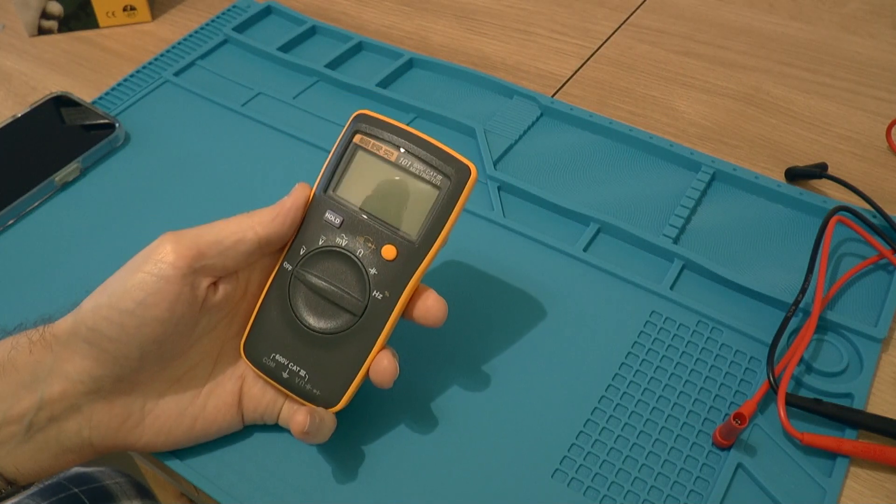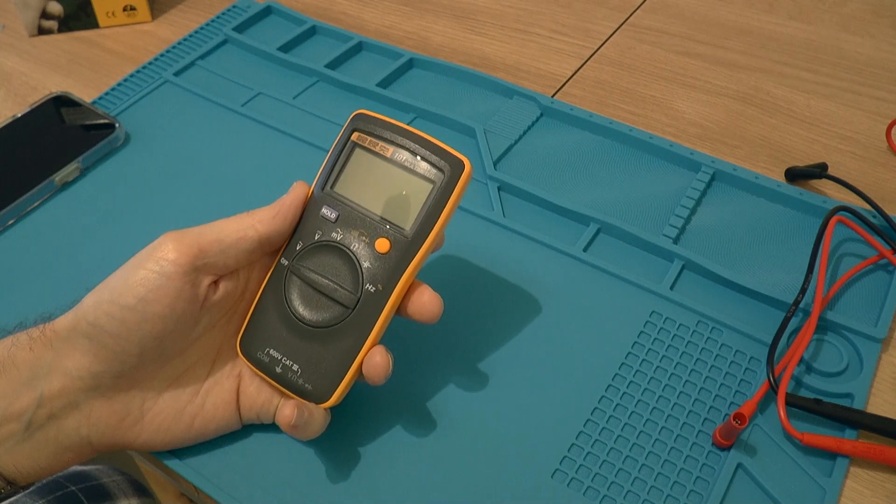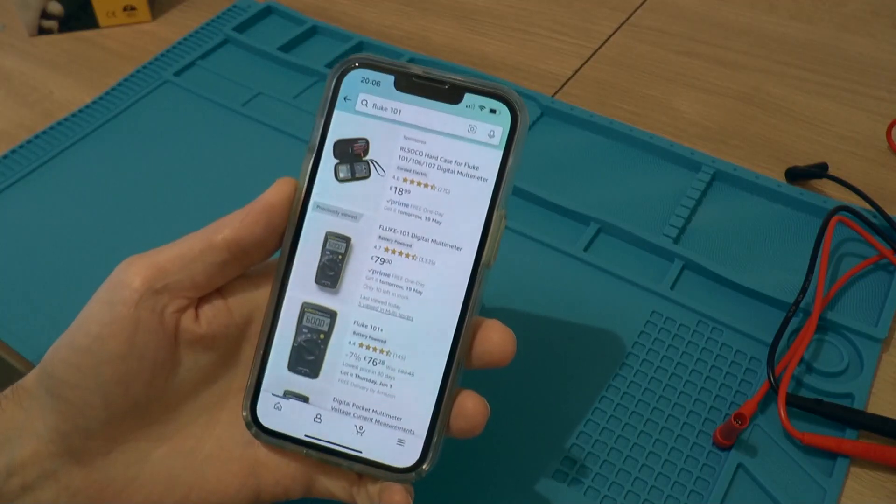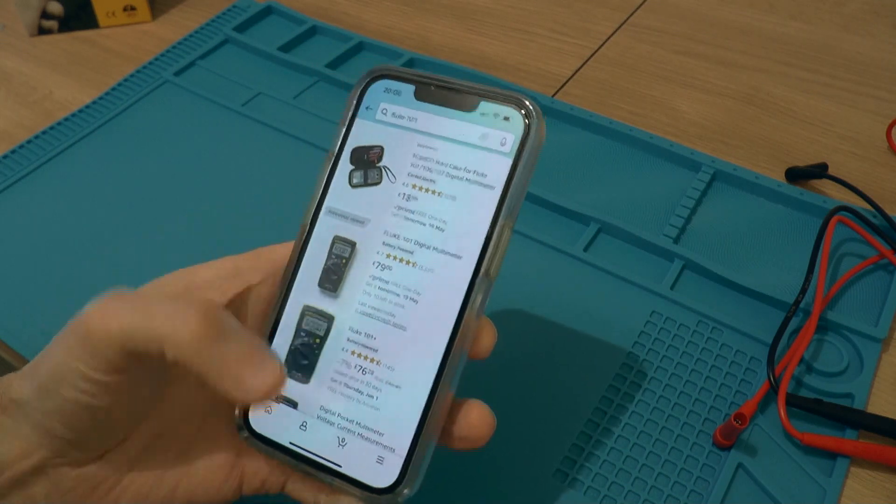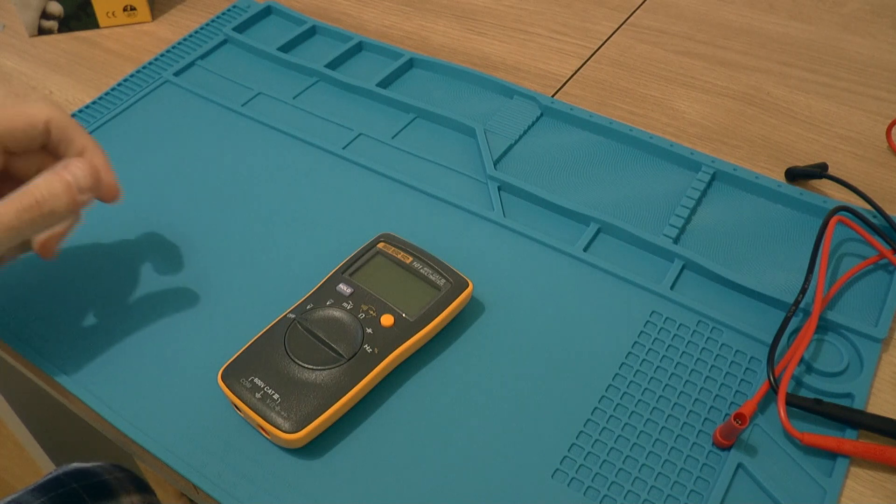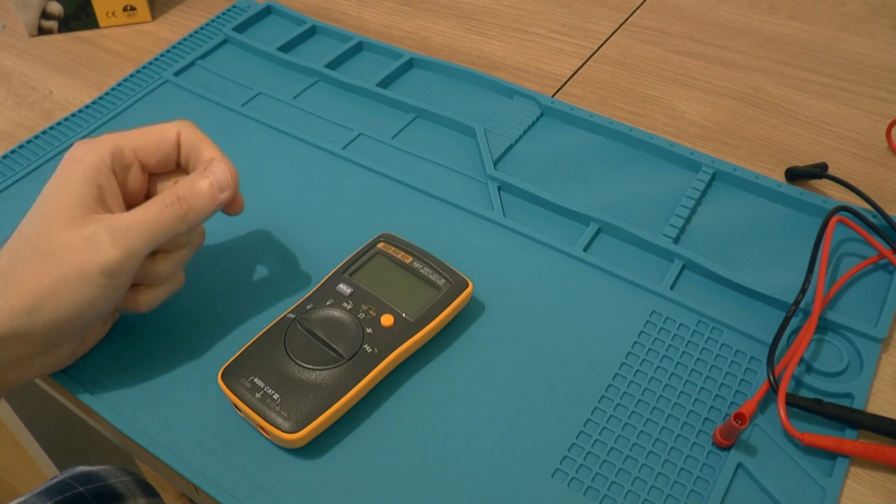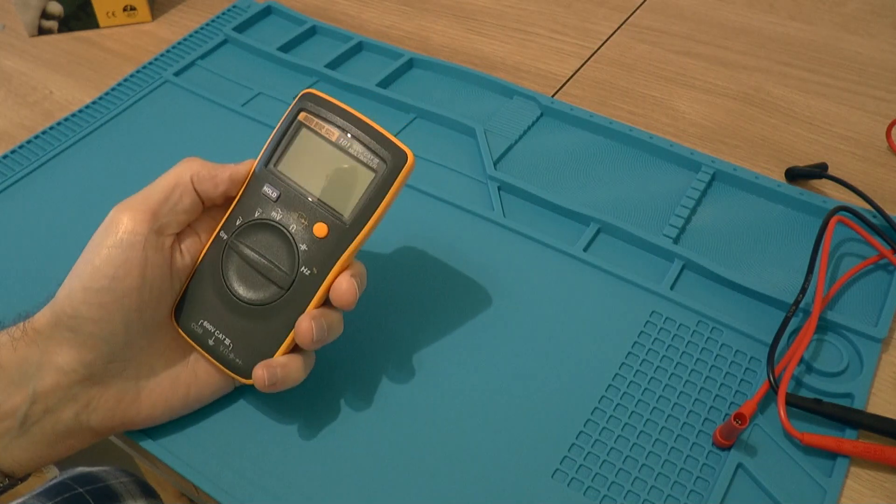This is a Fluke 101 multimeter. It's the cheapest Fluke multimeter you can get, as far as I'm aware. It's available on Amazon in the UK for £79. I know you can certainly get it cheaper than that. I actually got this one from eBay for about £35, and the reason it was that cheap is because this is the Chinese version.